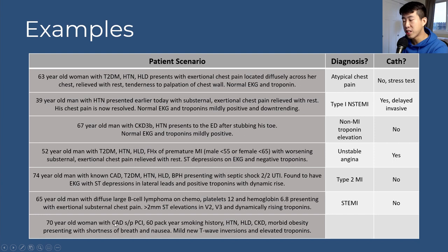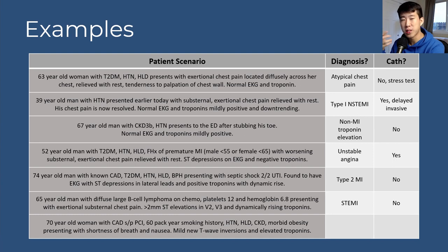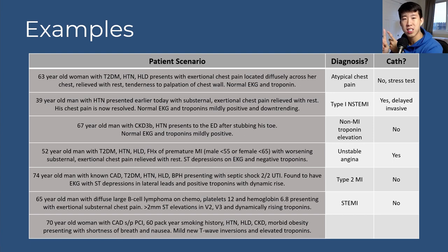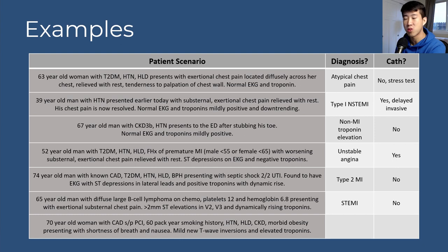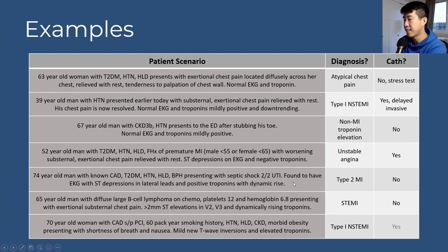Scenario 7: 70-year-old woman with known CAD, prior PCI, 60-pack-year smoking history, hypertension, hyperlipidemia, presenting with shortness of breath and nausea — atypical presentation. She has mild new T-wave inversions and elevated troponins. Remember, elderly women are among the populations prone to atypical ACS presentations. With her extensive risk factors and elevated troponins, this is a type 1 NSTEMI. She should definitely receive cardiac catheterization given her very high TIMI/GRACE score.